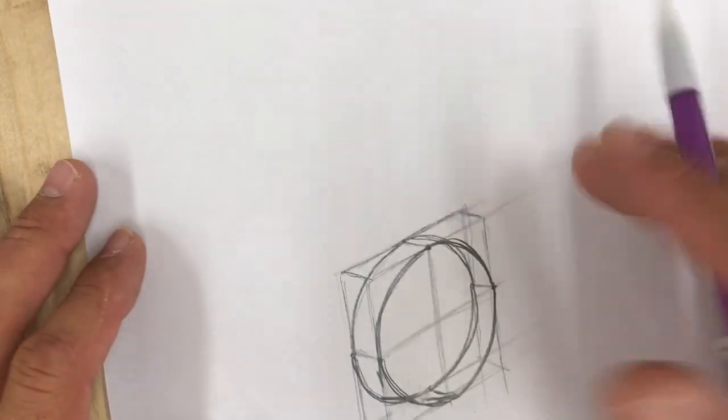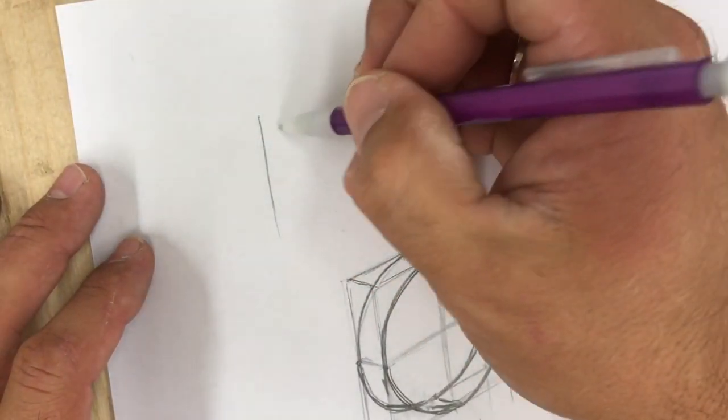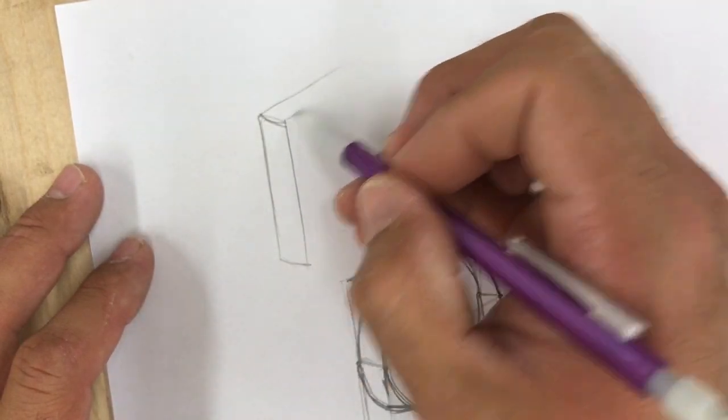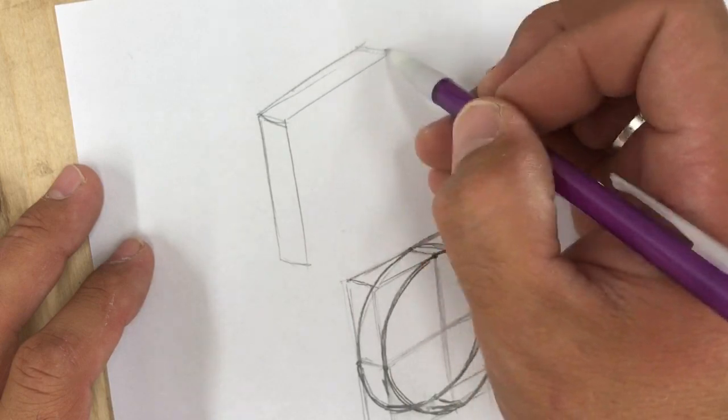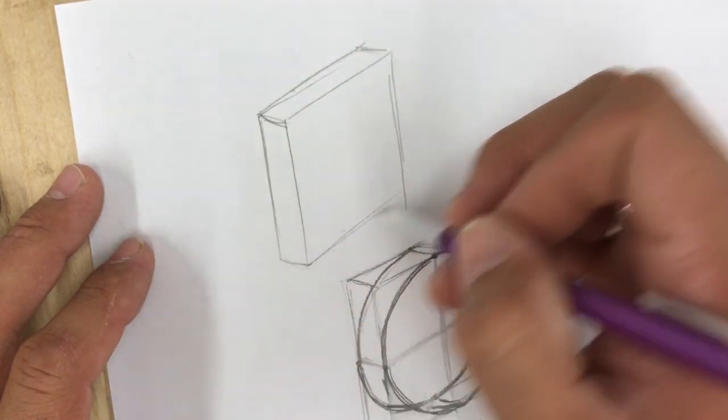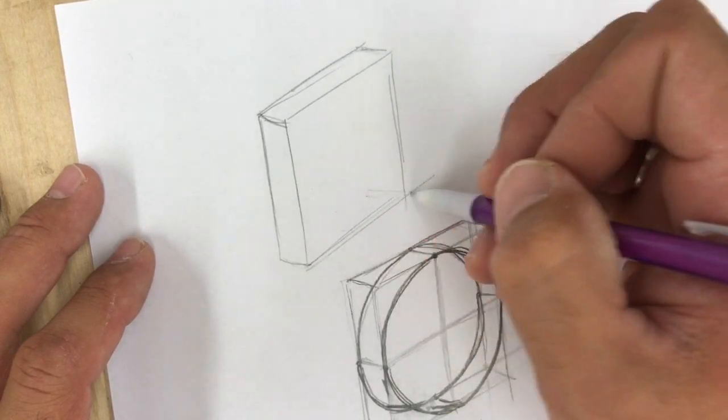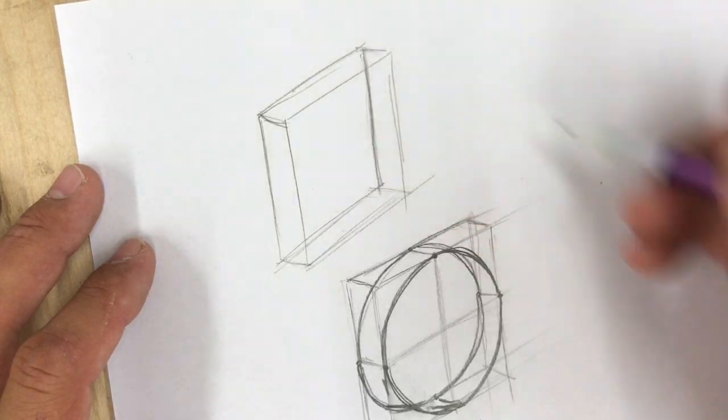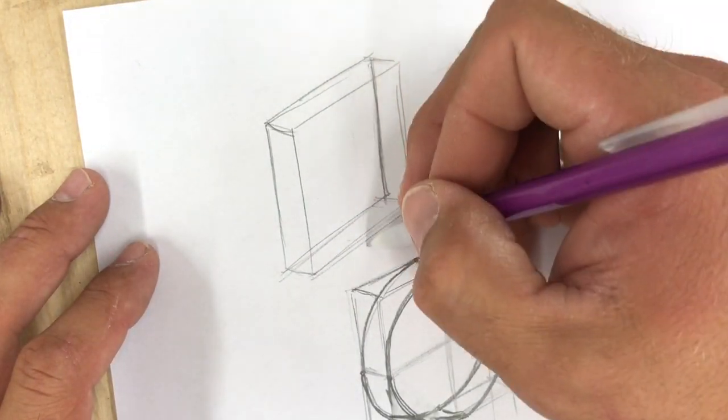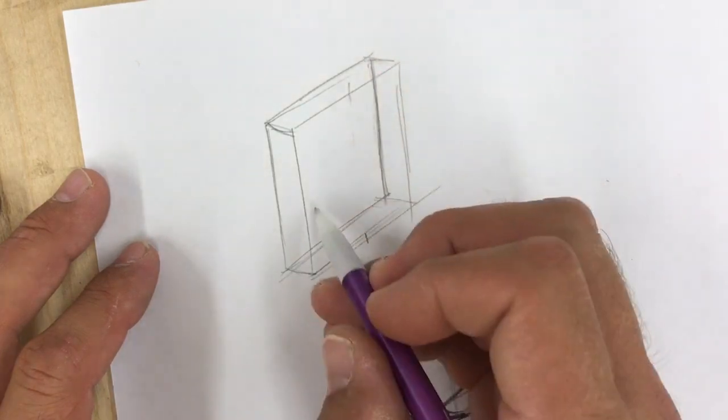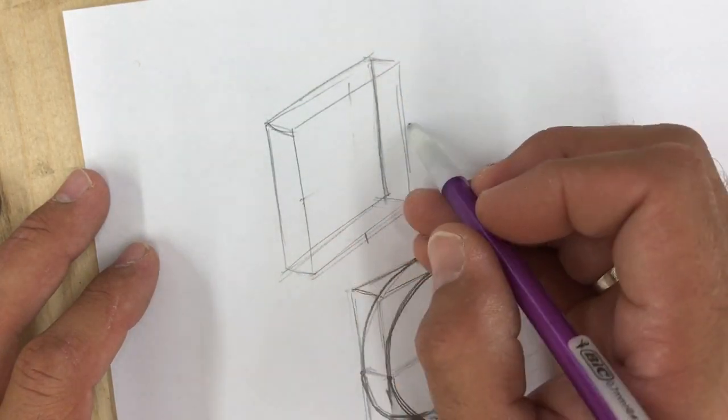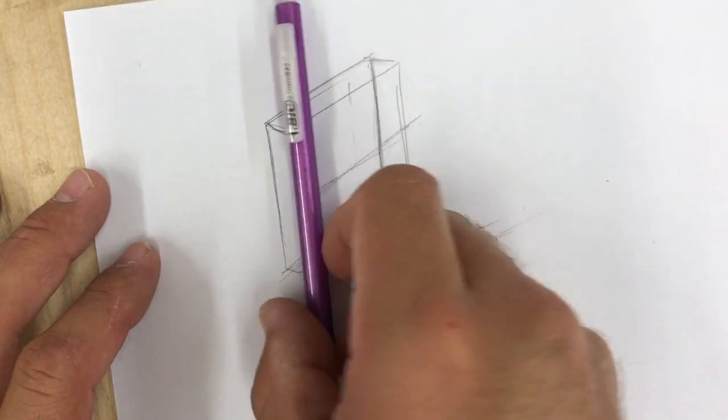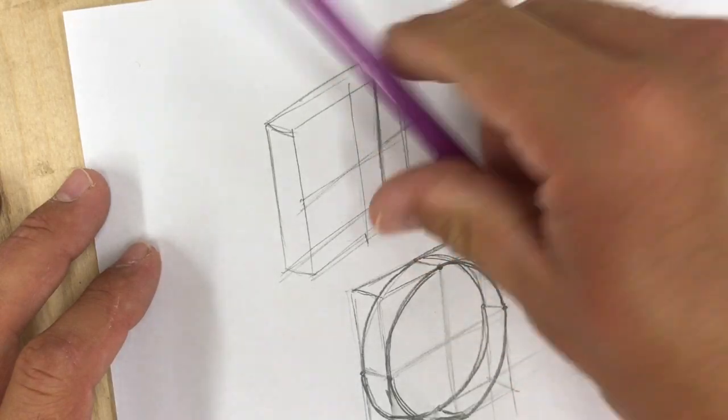So I'll do it again and put in my cube, how thick I want it to be. Just like that, I'm going to go halfway, make sure those lines are parallel, I'm going to go across, right. I want to make sure these lines are parallel.